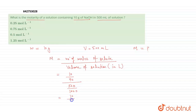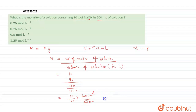This gives us 10 divided by 40, multiplied by 1000 divided by 500, which comes out to be 0.5 mol per liter.